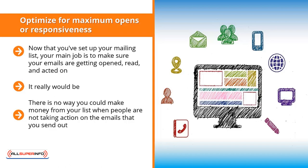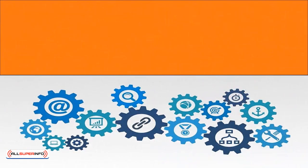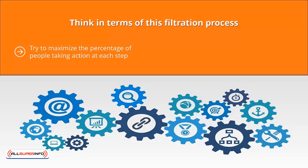There is no way you can make money from your list when people are not taking action on the emails you send. You have to work actively to maximize the percentage of people opening, reading, and clicking on your emails. Think in terms of a filtration process: you can start with 1,000 people on your list and end up with only 100 opening your emails, and of those, only 20 might click on the link in the body. Try to maximize the percentage of people taking action at each step.